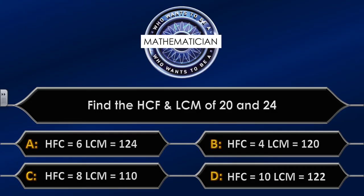Find the highest common factor and lowest common multiple of 20 and 24. The four possible answers are: A — HCF equals 6, LCM equals 124; B — HCF equals 4, LCM equals 120; C — HCF equals 8, LCM equals 110; D — HCF equals 10, LCM equals 122. I'm going to give you around 15 seconds to see if you can answer this question.